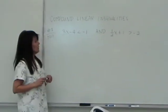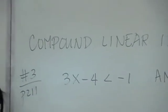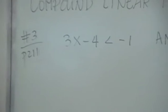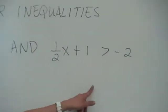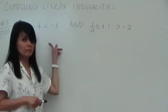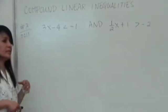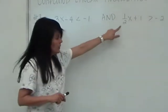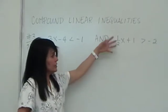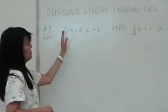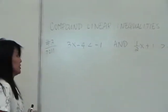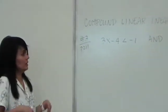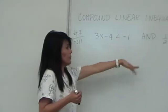Next we talk about compound linear inequalities. It's an inequality because you have inequality symbols. It's linear because the polynomial expressions are degree 1 — no variable in the denominator, no degree 2. It's compound because you see the word 'and.' Degree 1, no fractions with a variable underneath.